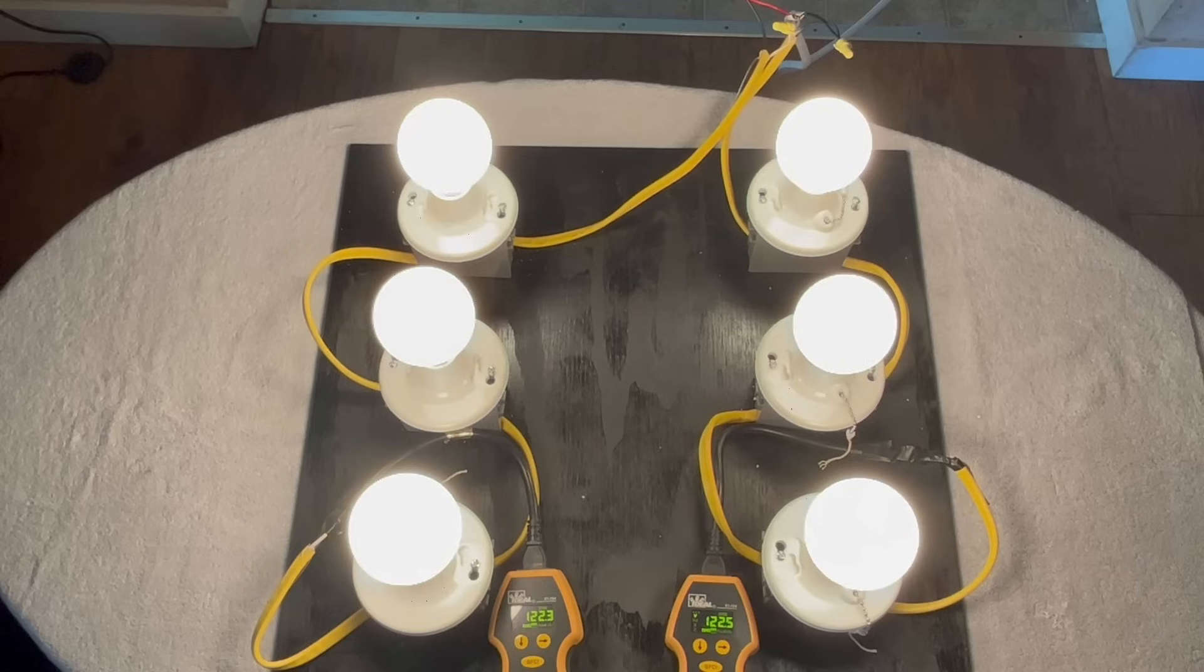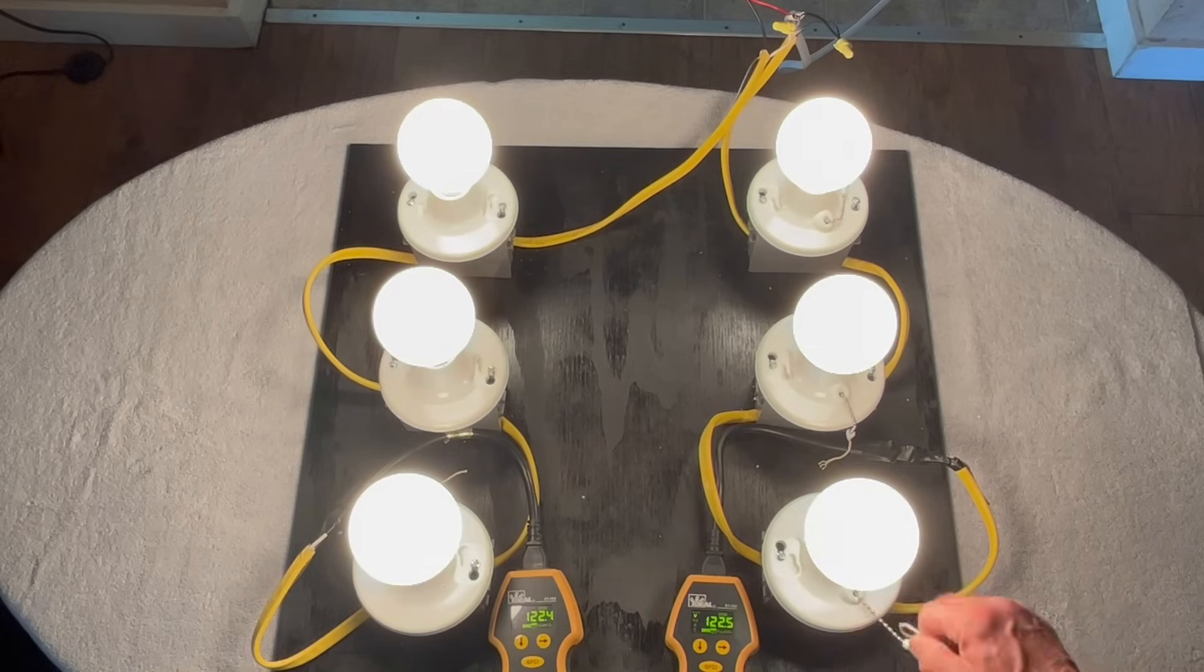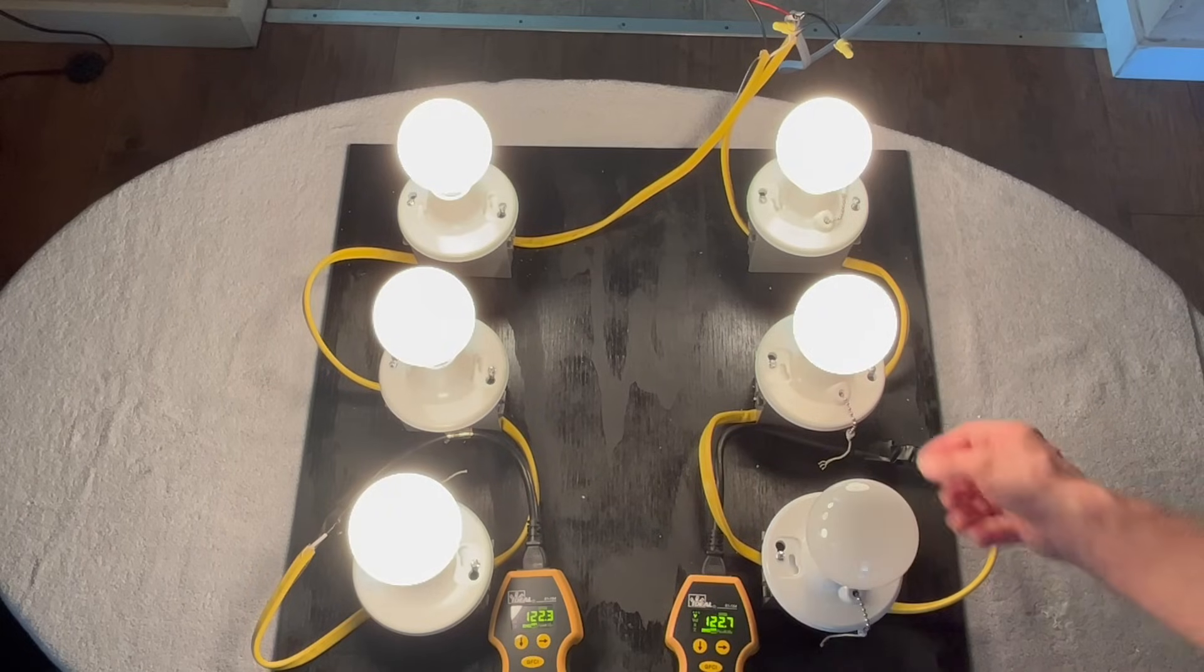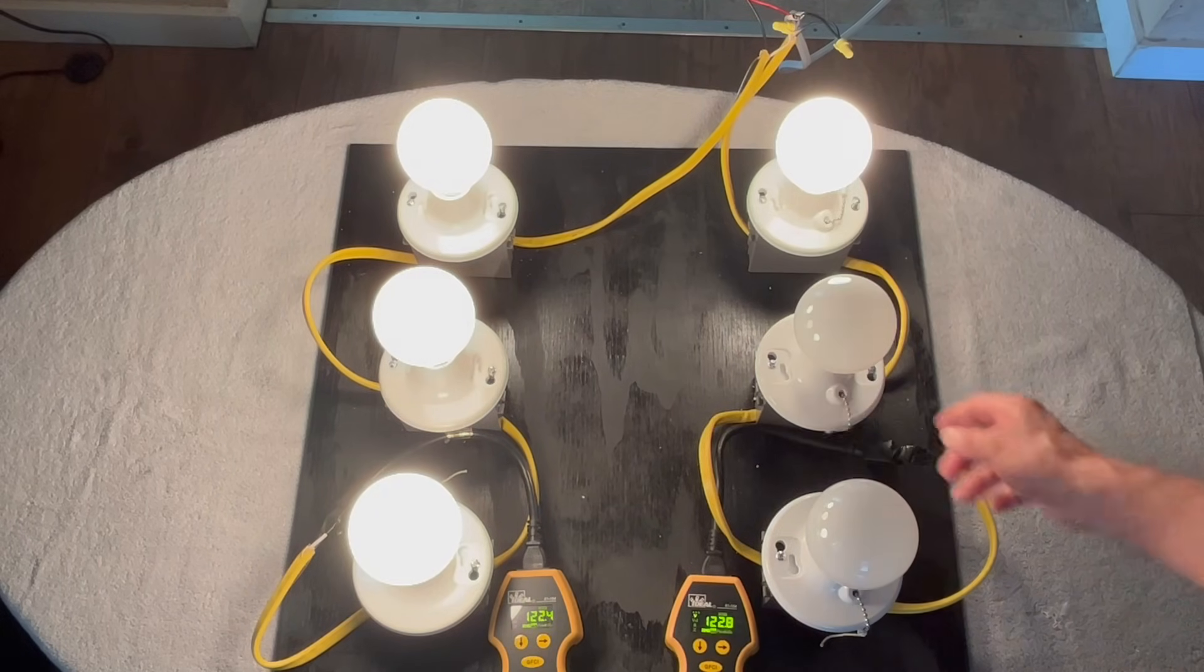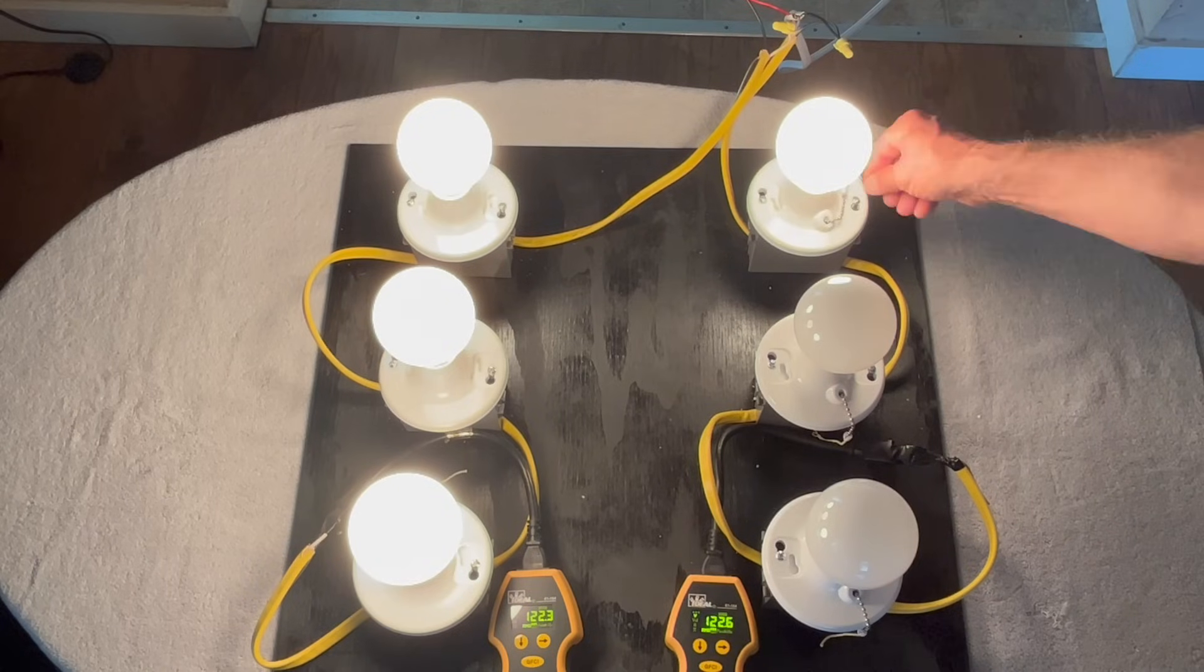So again, one leg, as you can see down here, is about 120 volts, and leg two on this meter is also at about 120 volts. It doesn't matter if I turn off some of these lights. Since the loads are in parallel, the voltage doesn't change. Regardless of how many lights or loads are turned off, the voltage remains the same.